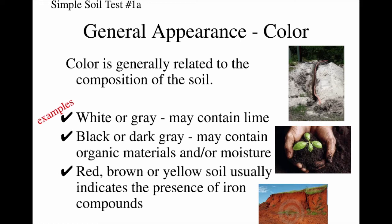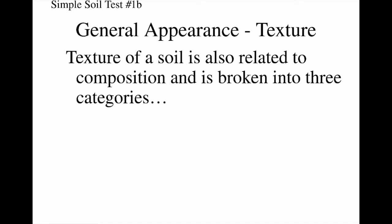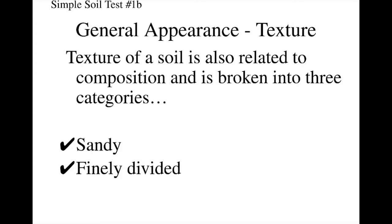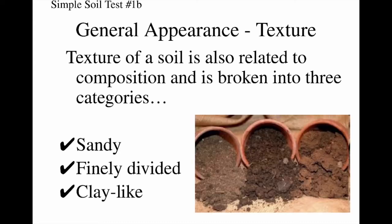Another thing we can learn about soil just from looking at it is the texture. There are actually three different categories of soil, and it is related to what it's made of, its composition. Those textures are sandy, finely divided, and clay-like. From left to right, we've got sandy on the left, finely divided — which is probably 85% of what you think of as garden dirt — and then clay-like soil, which, like the name implies, is very much like clay.